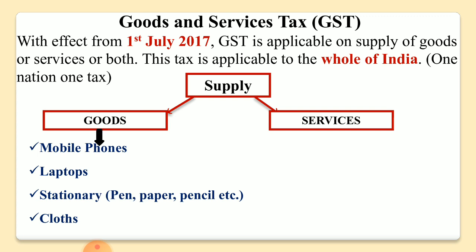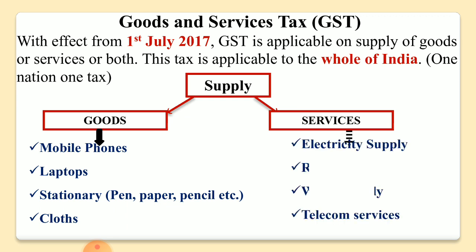Goods means the things that we can touch, the things that we can see, that we can move here and there. Like for example, mobile phones, laptops, stationery, pen, paper, pencil, and clothes — all these are goods. And if we talk about services, all the things that are beyond goods, like electricity supply, restaurant, water supply, telecom services — all these are services.